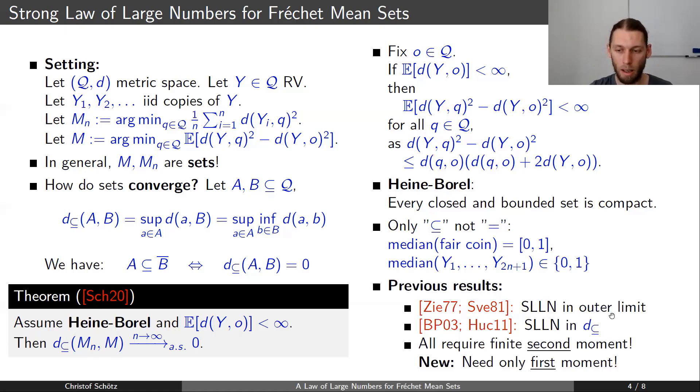There have been some in outer limit, which is a weaker notion of convergence of sets, but also some in this subset distance.